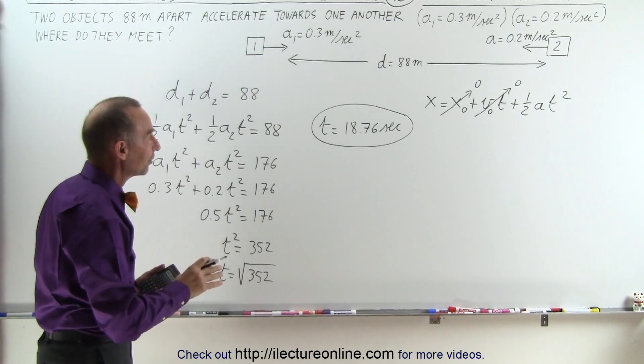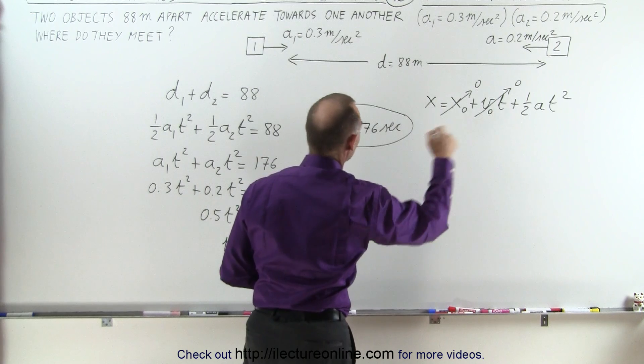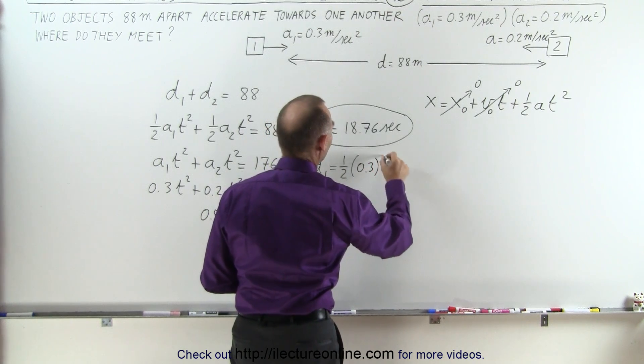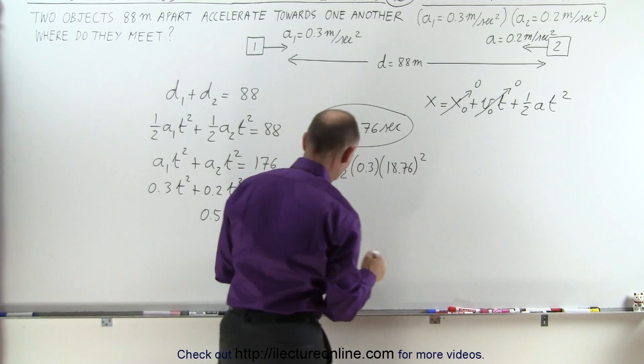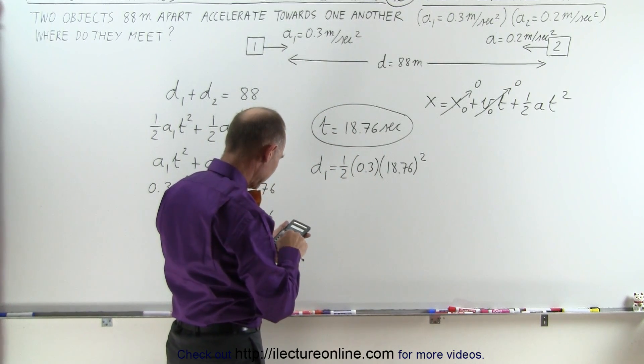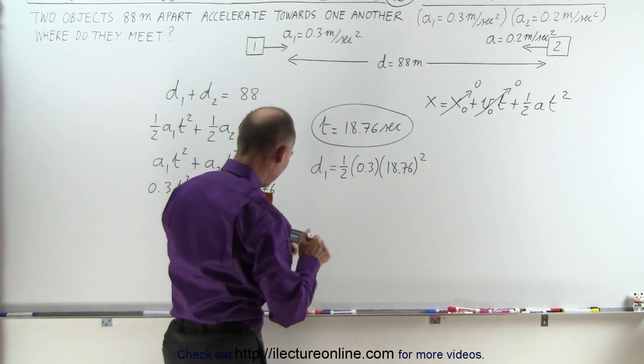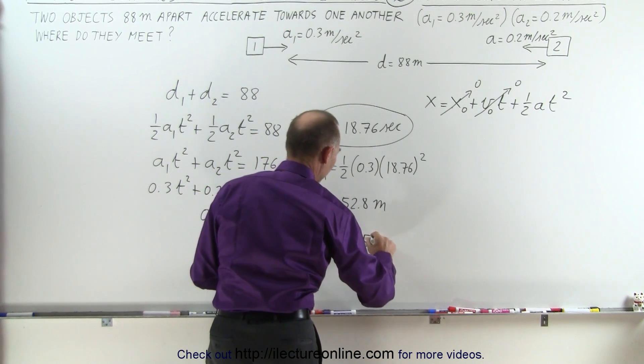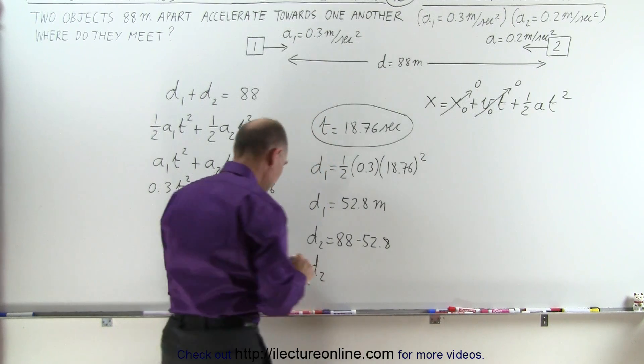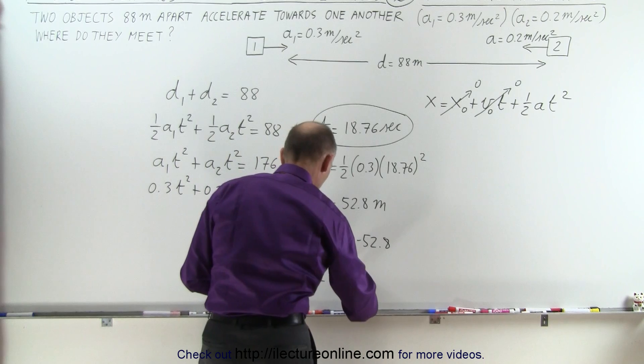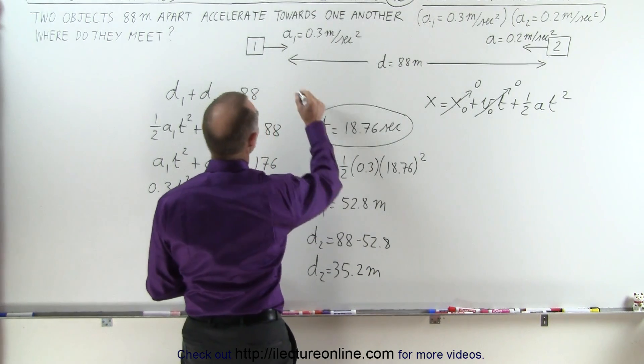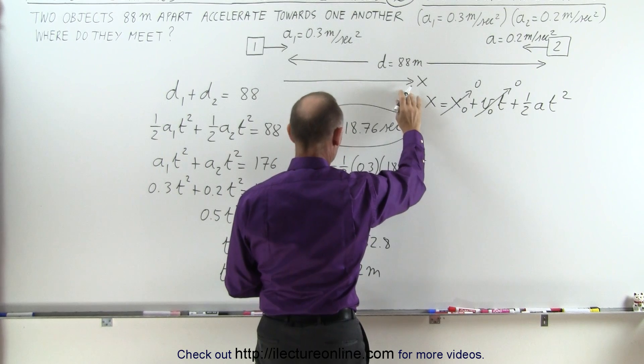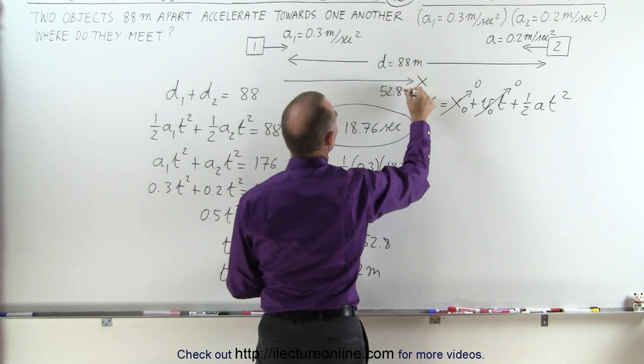Distance 1 equals one-half times a₁, which would be 0.3, and time would be 18.76 quantity squared. We get 52.8 meters. And distance 2 will be 88 minus that, so distance 2 will be 35.2 meters. You can see that if we start from this point, they'll meet past halfway from the left, and that would be a distance of 52.8 meters traveled by the first one and 35.2 meters traveled by the second one.